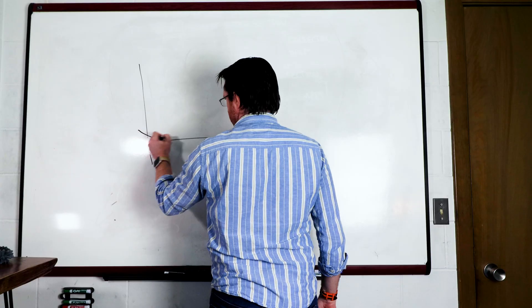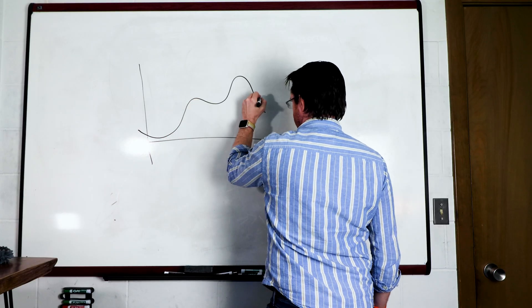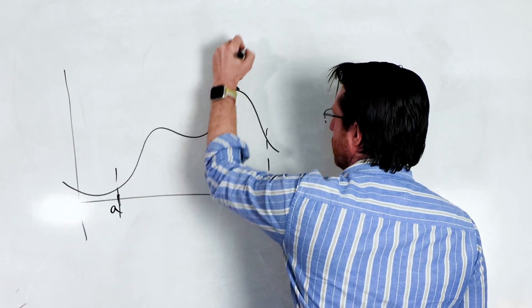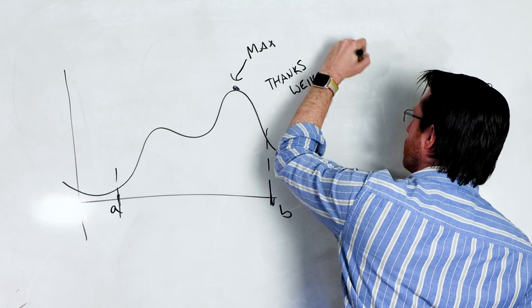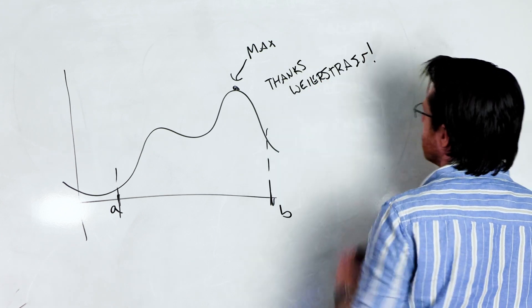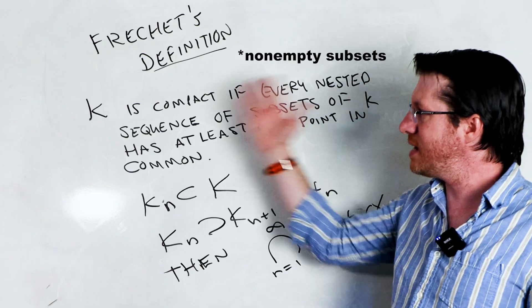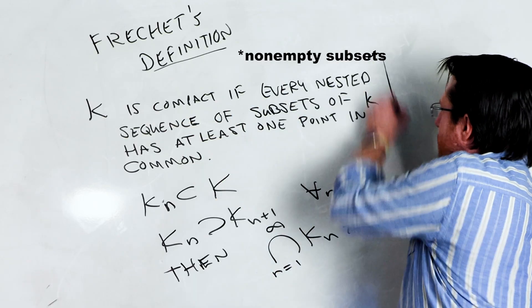So sit down, grab pen and paper, and prepare to dive into his quest to generalize the work of Weierstrass on continuous functions of a real variable. Weierstrass proved that for a closed bounded interval, continuous functions are guaranteed to take a maximum value. But closed and bounded can mean different things depending on the metric. Frechet needed to find a more fundamental property that gives this result in more general settings — that's what led him to the invention of a compact set.